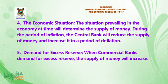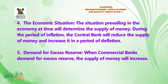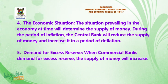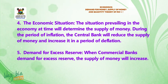Five: demand for excess reserve. When commercial banks demand for excess reserve, the supply of money will increase. I hope you've gotten those points under determinants of supply of money.